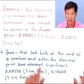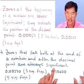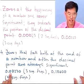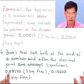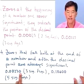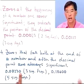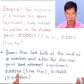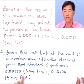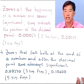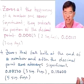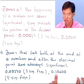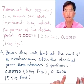Fourth, zeros that fall at the end of a number and after the decimal point are always significant. So in 0.00230, the leading zeros are not significant by rule three, but that trailing zero is significant — because writing 2, 3, 0 implies the number is between 2.29 and 2.31. If you think back to the weight problem where I mentioned 166 versus 166.0, rule four makes perfect sense. So 0.00230 has three significant figures, and 0.18600 has five significant figures.